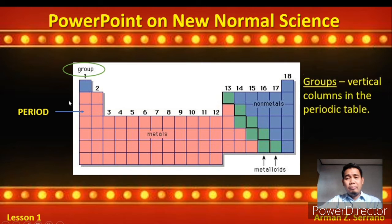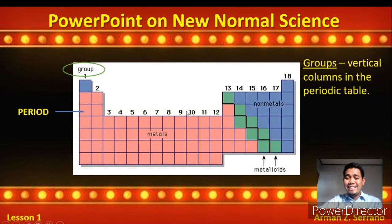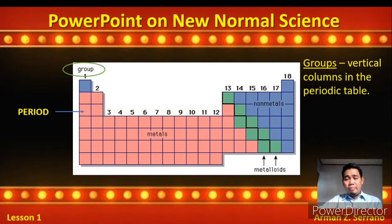What is a group? Groups are vertical columns in the Periodic Table. So we have group 1 through 18 — 18 columns in total. Primarily, these 18 columns or groups in the Periodic Table are divided into two main groups: Group A, or representative elements, and Group B, the transition elements.